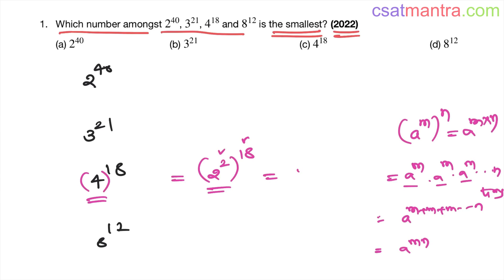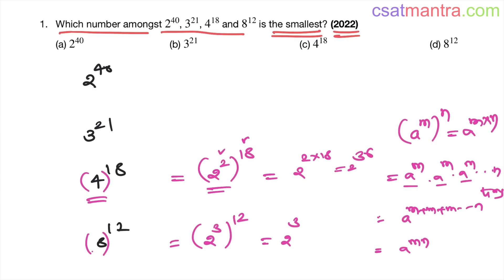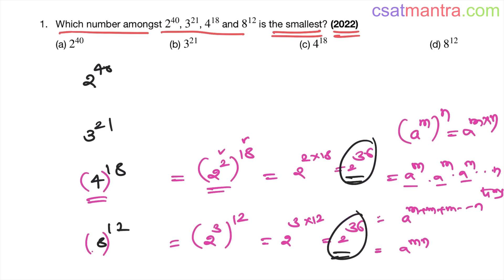Now 8 can be written as 2 cubed. Again applying a power m whole power n: 2 power 3 into 12 gives 2 power 36. So both 4 power 18 and 8 power 12 equal 2 power 36 — they are equal.